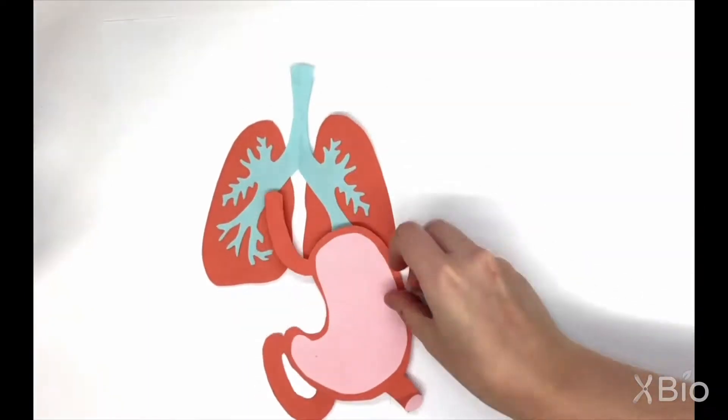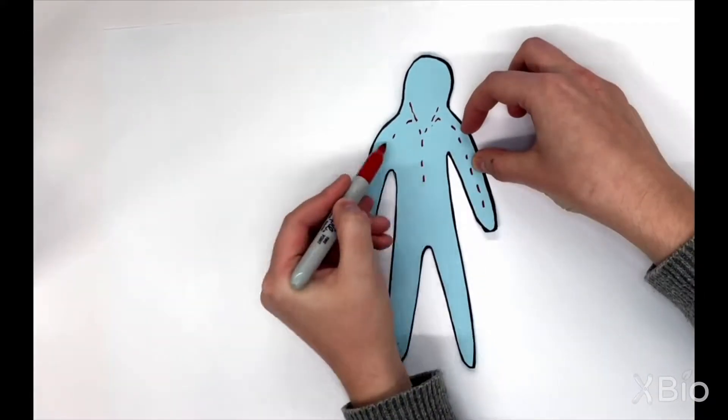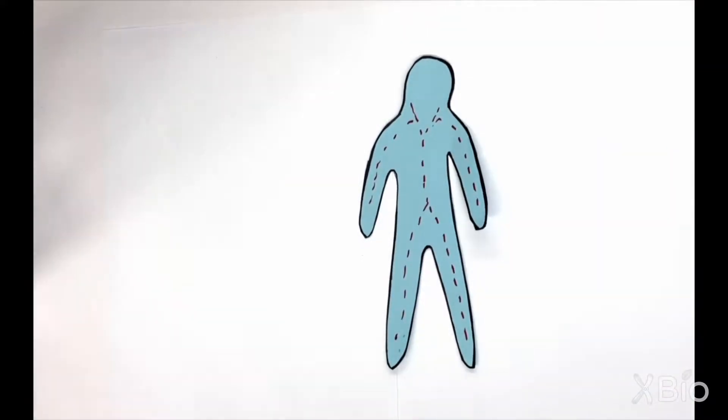The human body is made up of 78 organs, 206 bones, and trillions of cells. This enormous number of parts needs to be in constant contact, despite the huge distance that separates them.